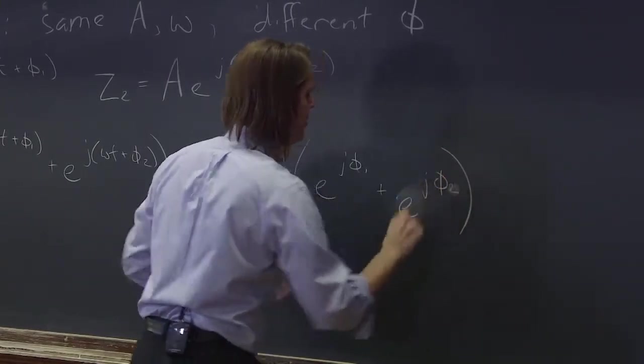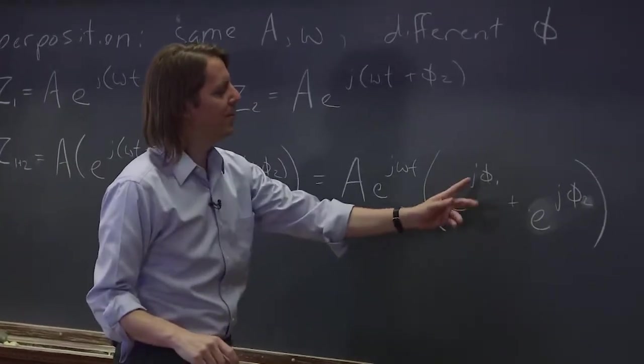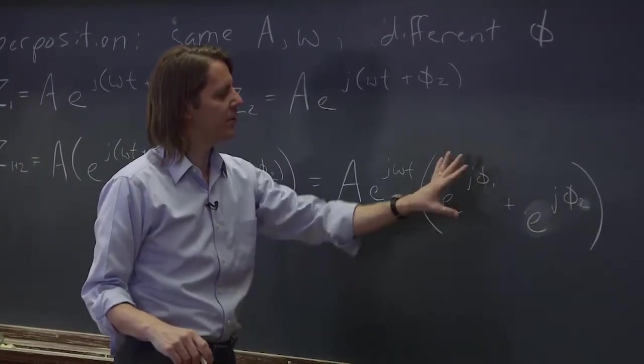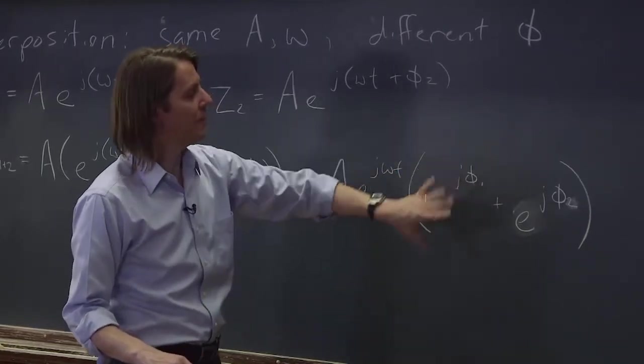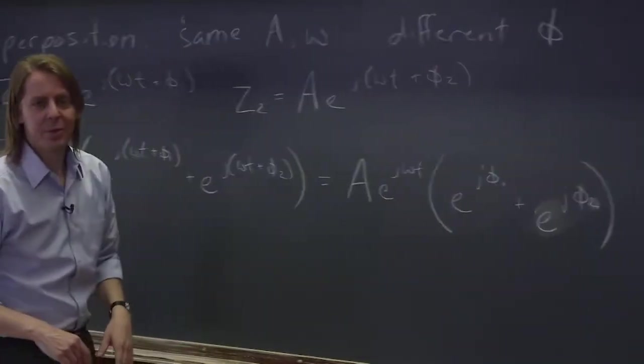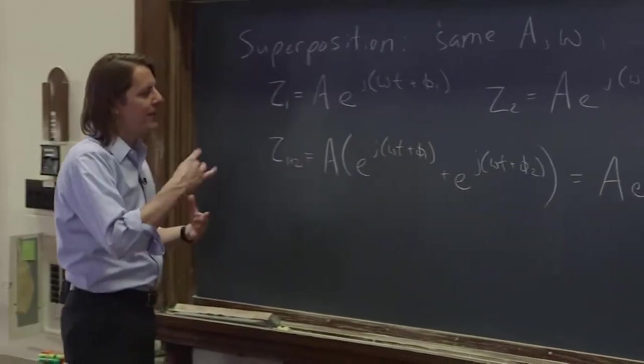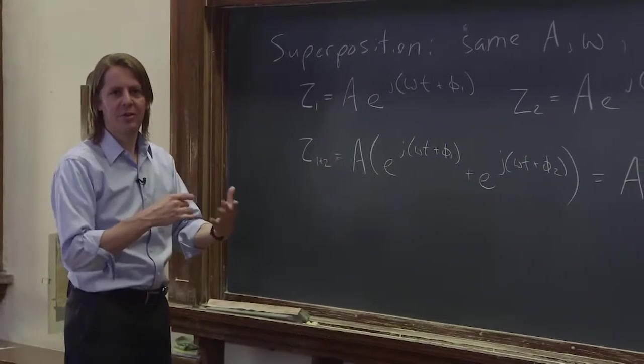And keep in mind, there's no time here. So even though it's an imaginary exponential, it's got an imaginary part in the exponent, there's no time. So it's not an oscillating function. Those are just constants. When you're dealing with complex exponentials, the phase part just acts like a constant multiplier.